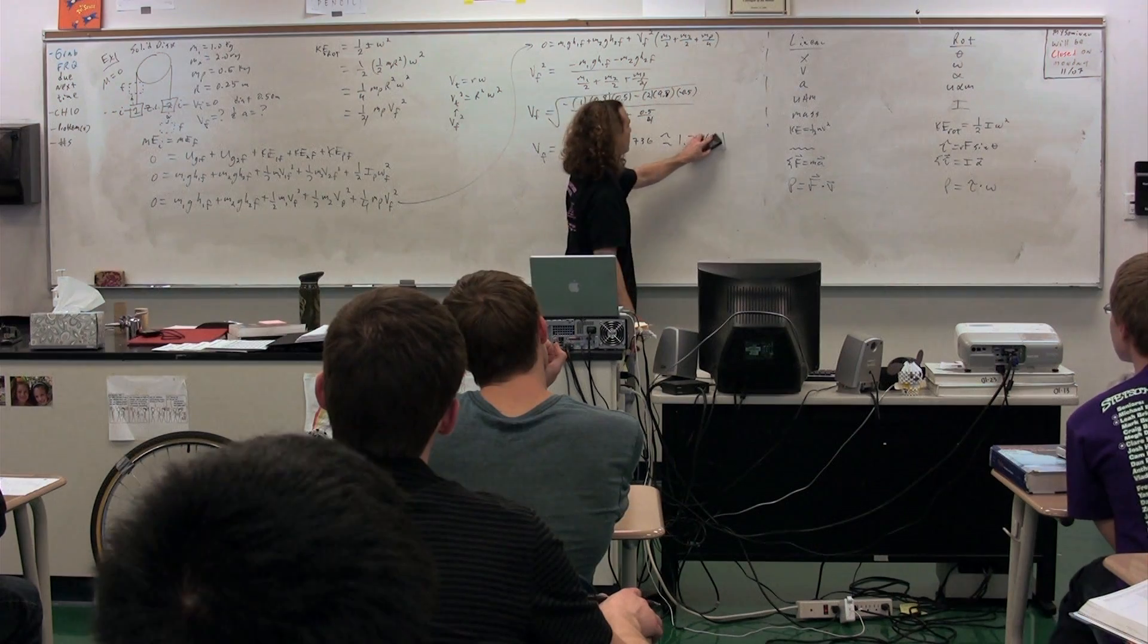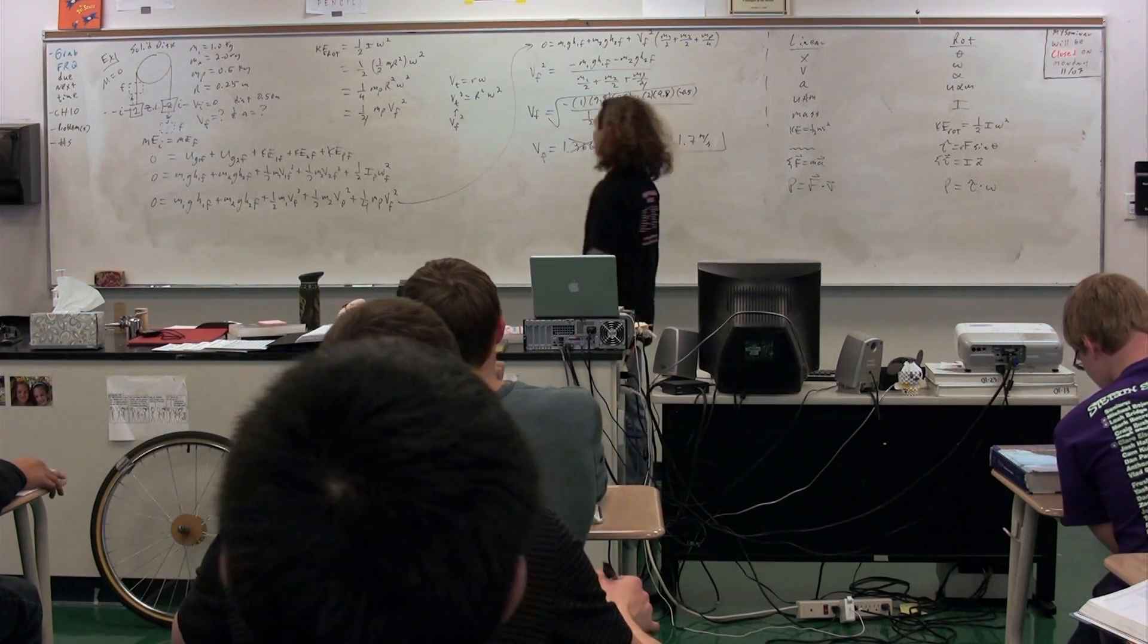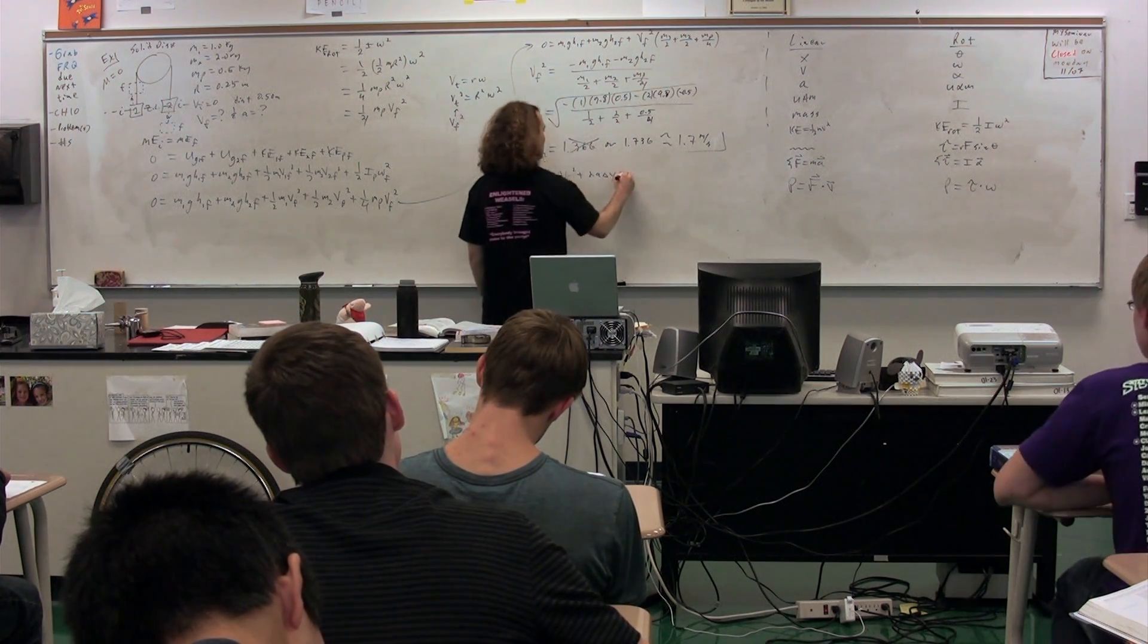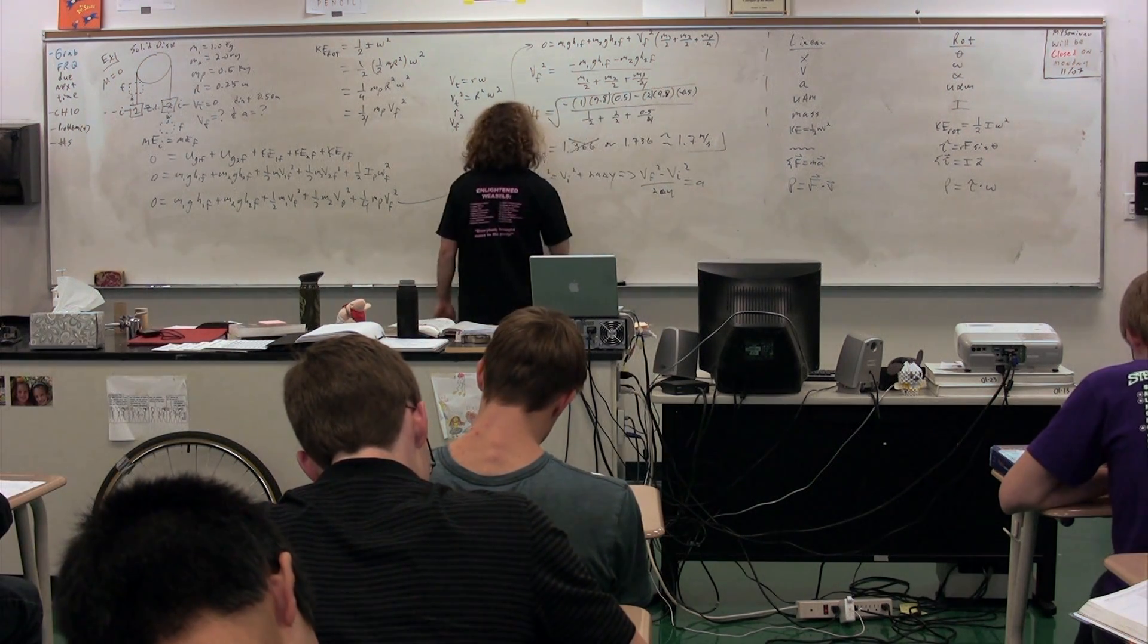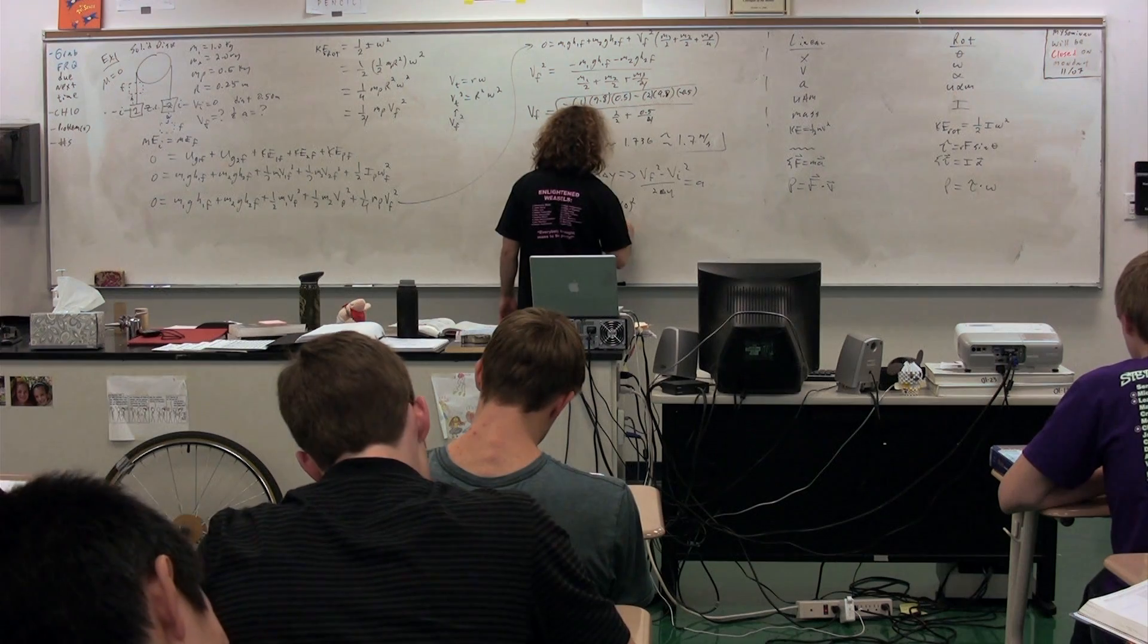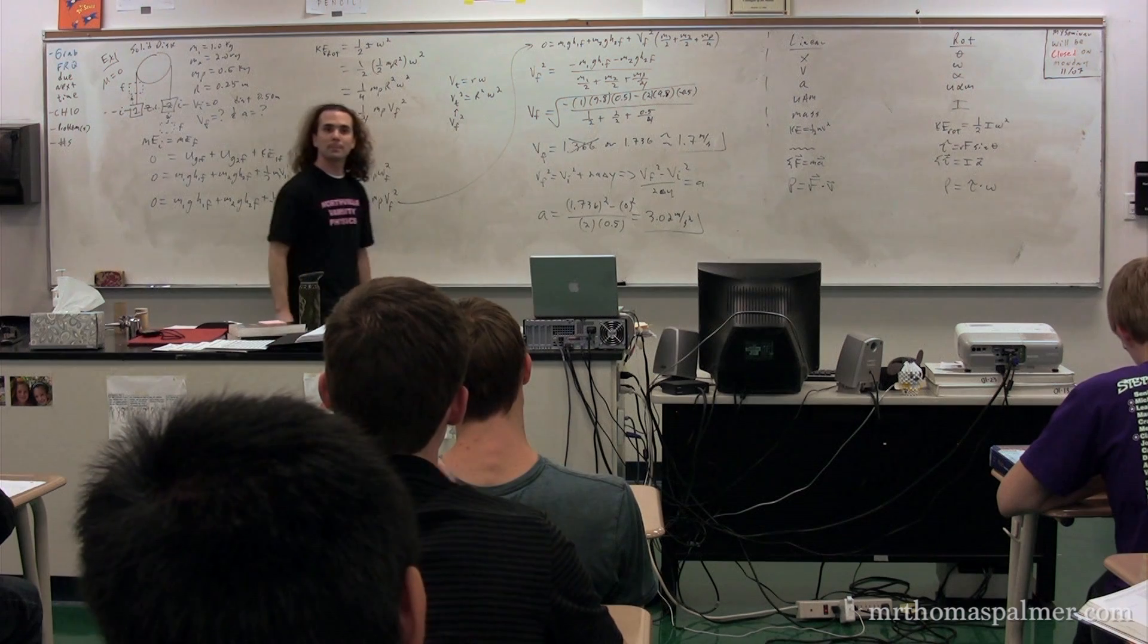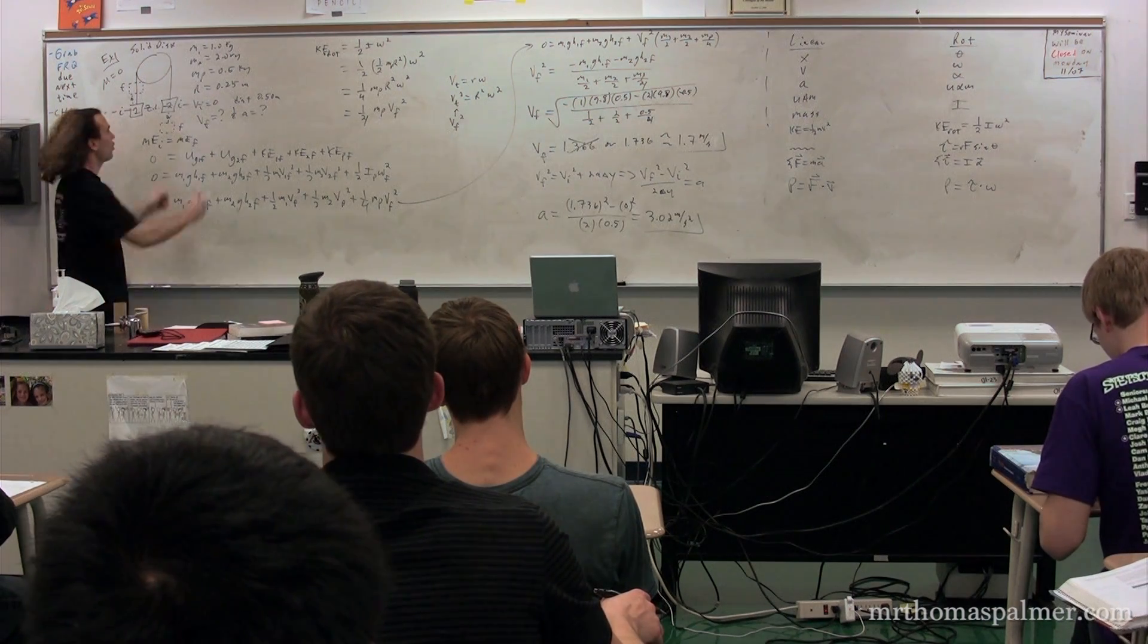Good job. So now, we need to figure out the acceleration. We can come all the way back. We can use a cozy old UAM equation. We have velocity final squared equals velocity initial squared plus 2A delta y. Therefore, if we rearrange it, we get the velocity final squared minus the velocity initial squared divided by 2 times the delta y equals the acceleration. So the acceleration equals 1.736 squared minus the initial which was 0 squared divided by 2 times 0.5. You're going 0.5 up and 0.5 down. How is it still 0.5? Because each object has moved 0.5.